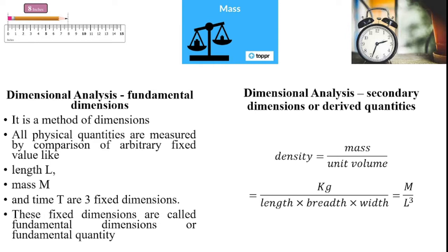So breadth can be expressed as length and width can also be expressed as length. The second important physical quantity is mass, expressed with capital M. If I want to study the motion of an object or particle, I should be aware of time. So the third important fundamental quantity is time.